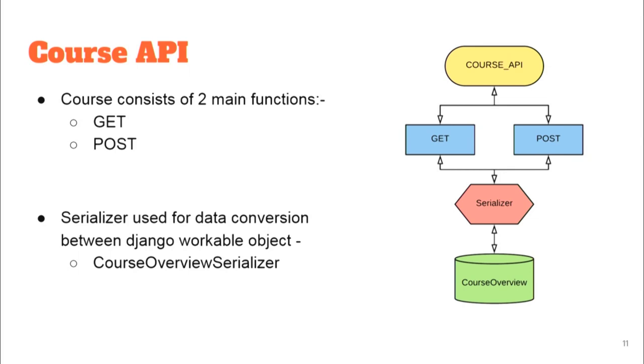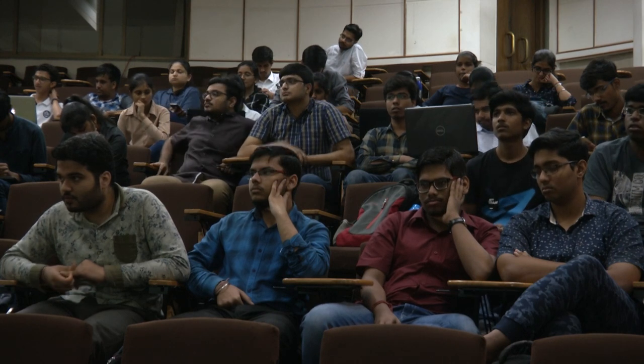The course API internally consists of two main functions: get and post. Get retrieves courses on the platforms; post creates new courses. We have also used a serializer known as the course overview serializer, which converts data from the request format to Django's format so we can process the data and return the appropriate response.